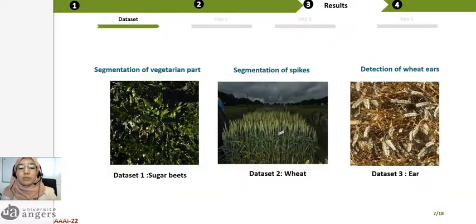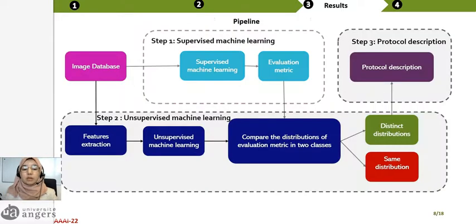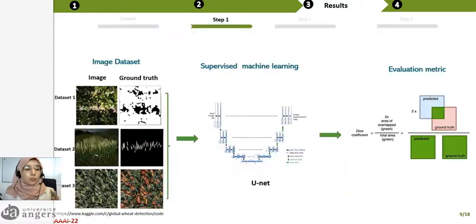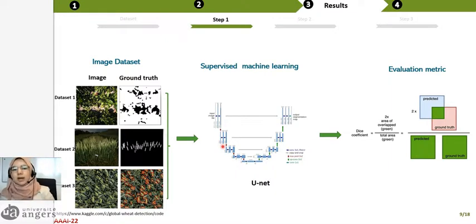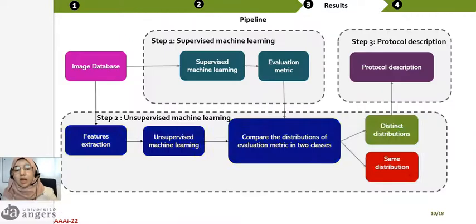We have three different databases with several acquisition conditions. We test the first step on our database: we have our images and the ground truth for segmentation or object detection. After that, we apply various supervised machine learning methods. To evaluate our results, we calculate the Dice coefficient, which is the intersection between ground truth and prediction.